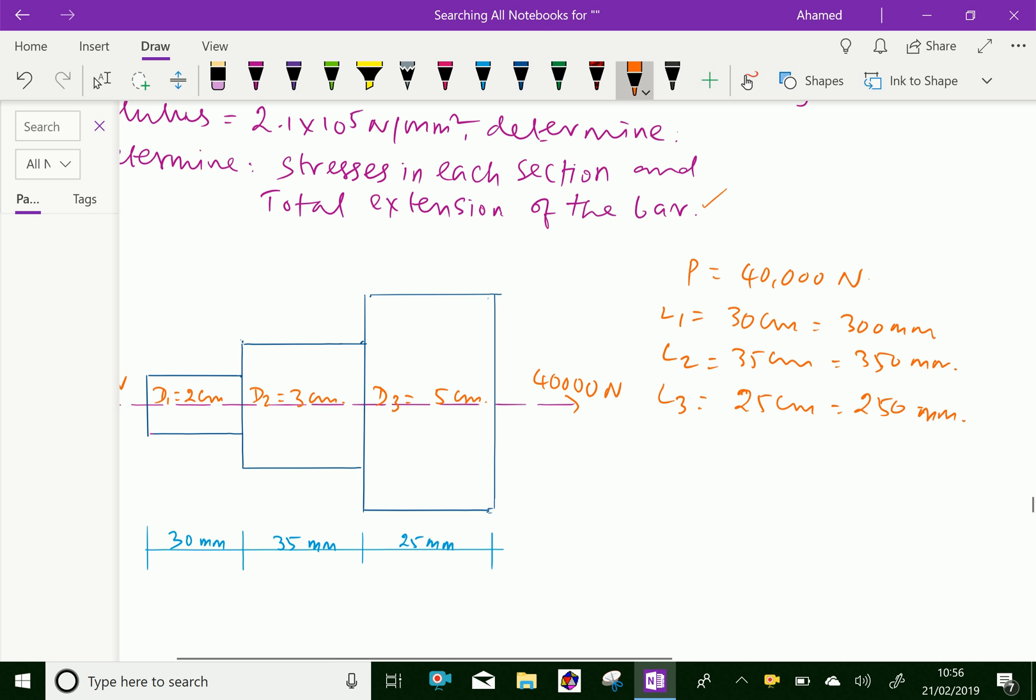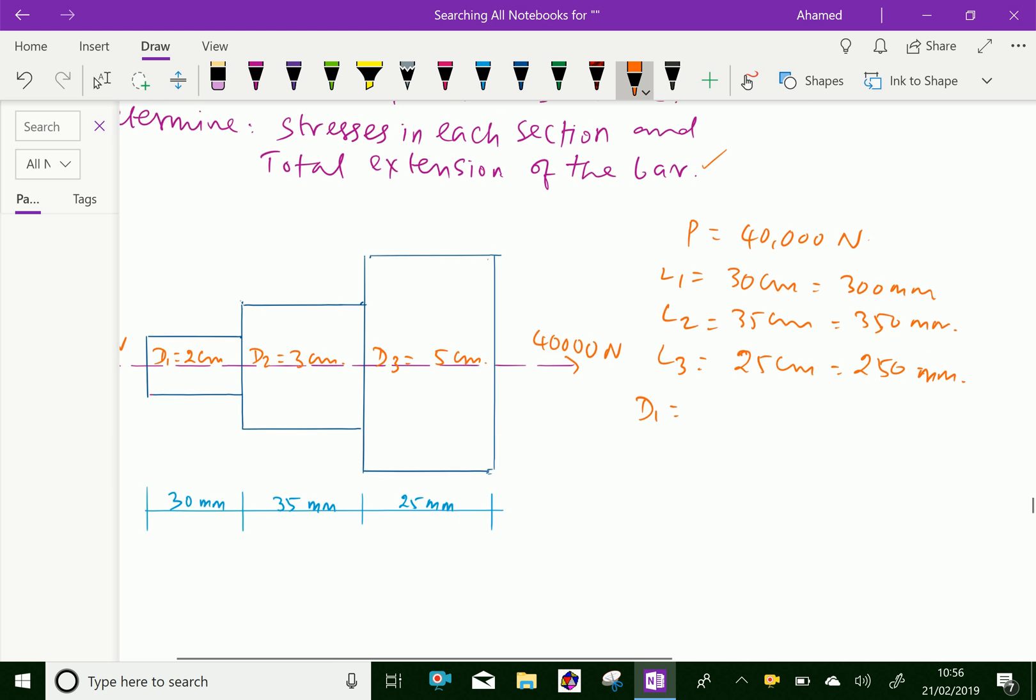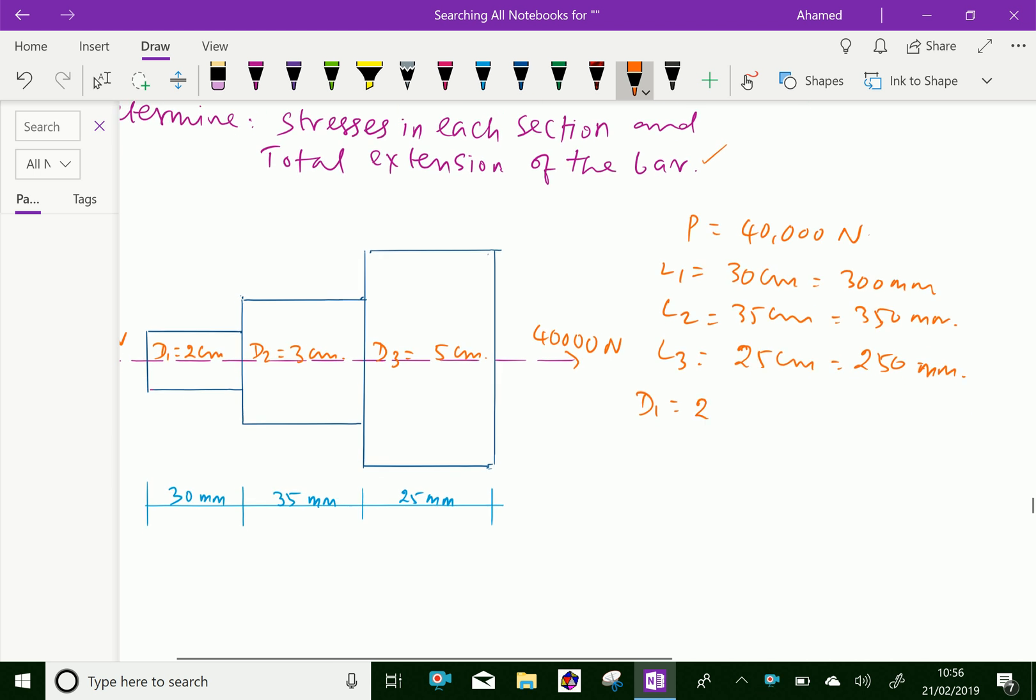Similarly, D1 diameter of the first section is 2 centimeter, which is equal 20 mm. D2 equal 3 centimeter, that is 30 mm. D3 equal 5 cm, which is equal 50 mm.